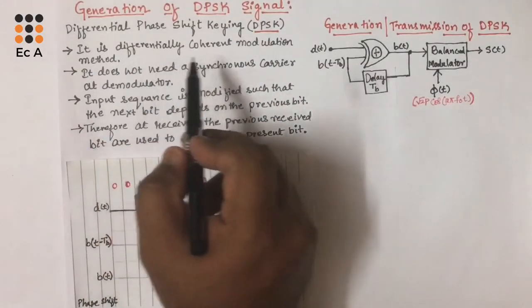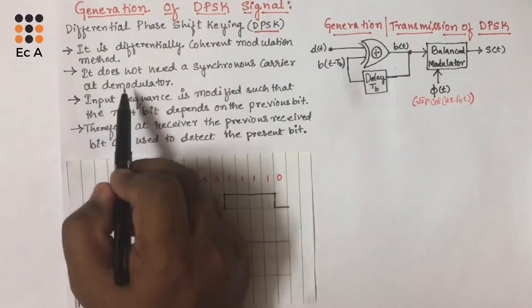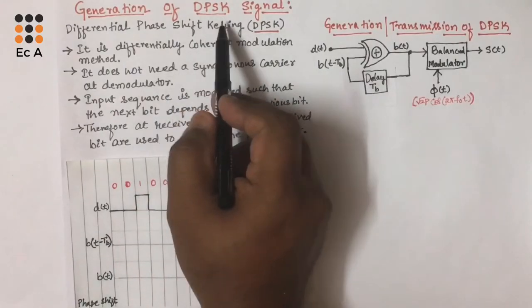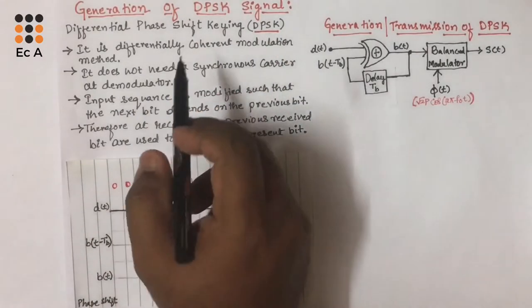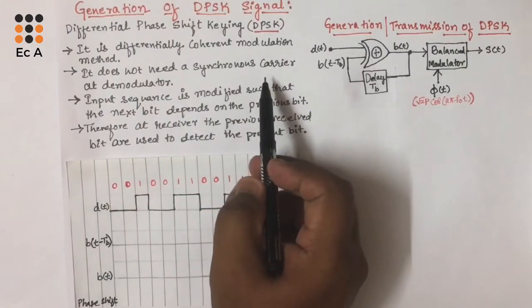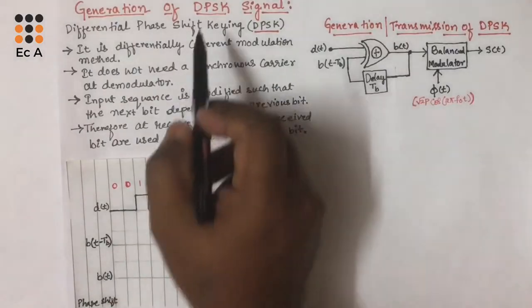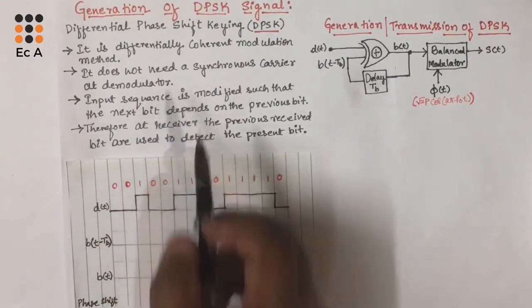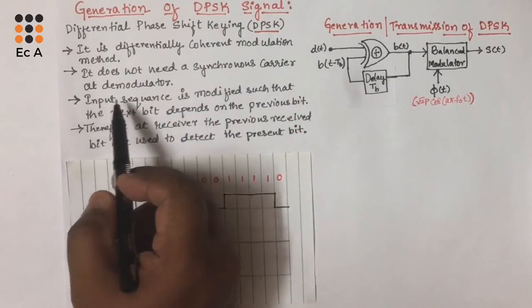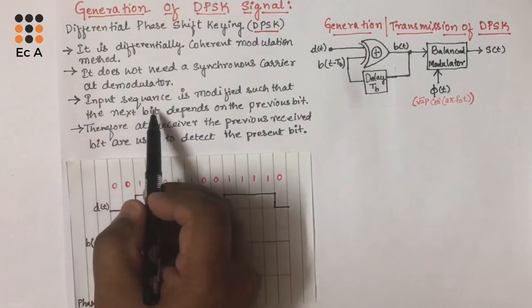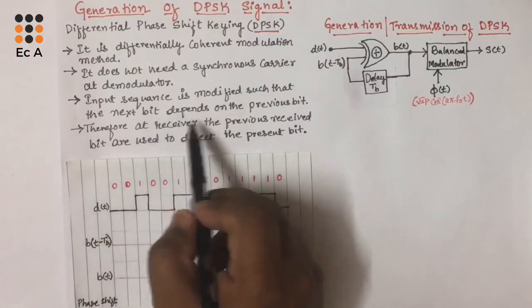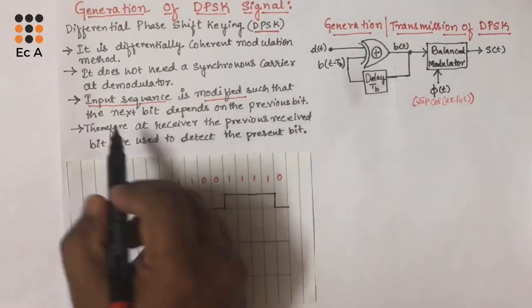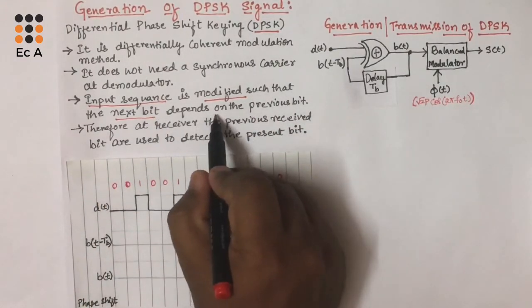DPSK is the differentially coherent modulation method, which means it does not need a synchronous carrier at the demodulator. If we compare this DPSK with BPSK signal, in BPSK we require a synchronous carrier at the receiving end to demodulate the signal. But in DPSK, it does not need a synchronous carrier at the demodulator because the input sequence is modified such that the next bit depends on the previous bit.